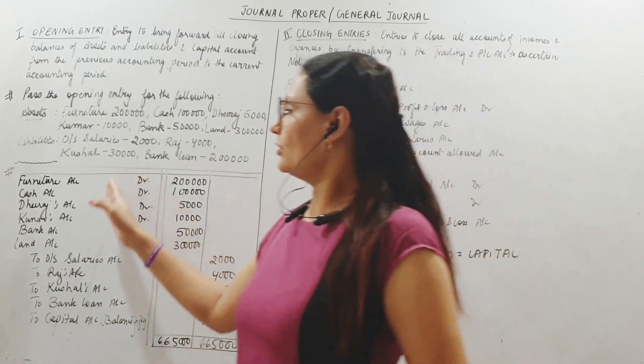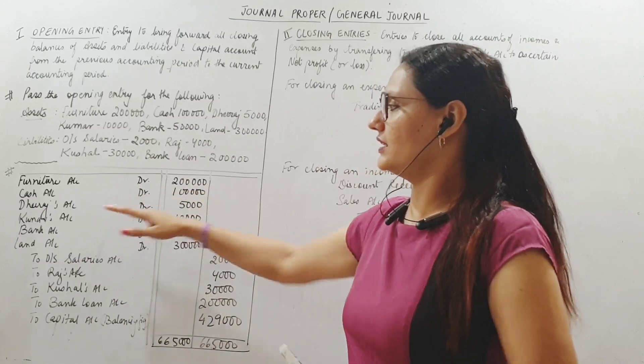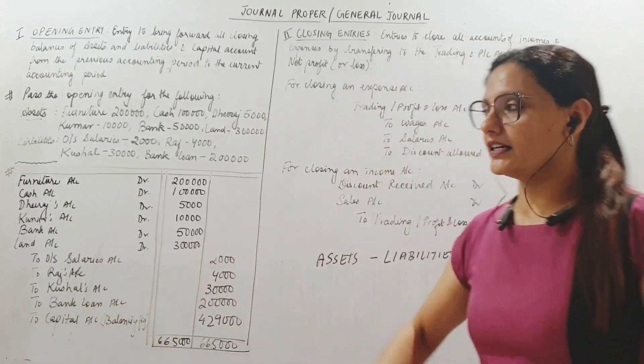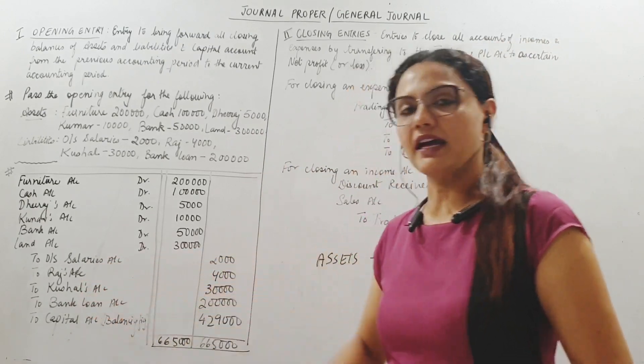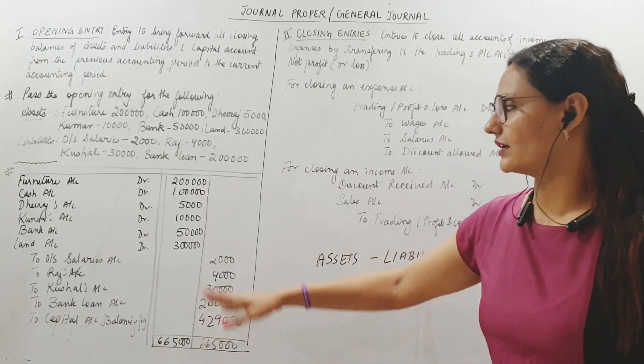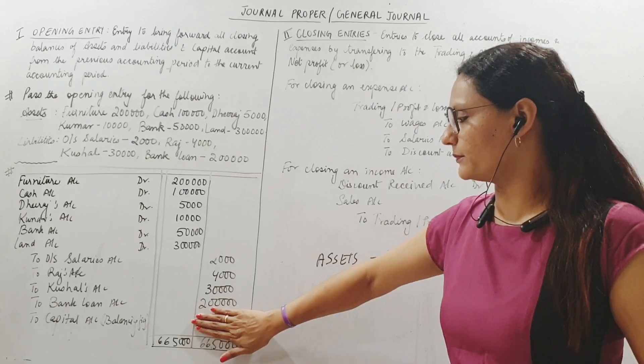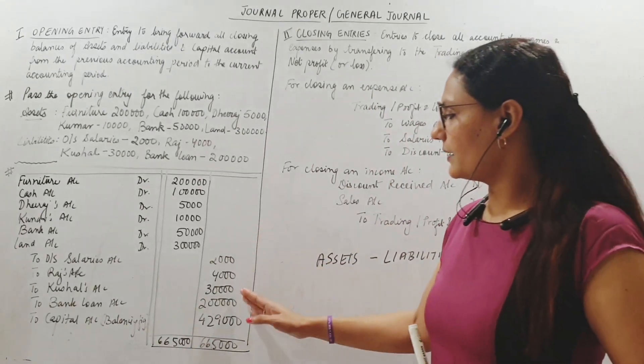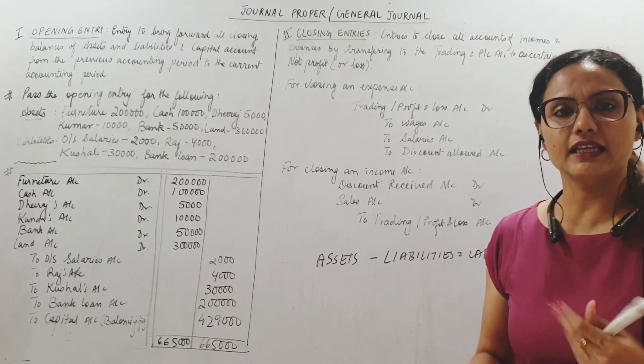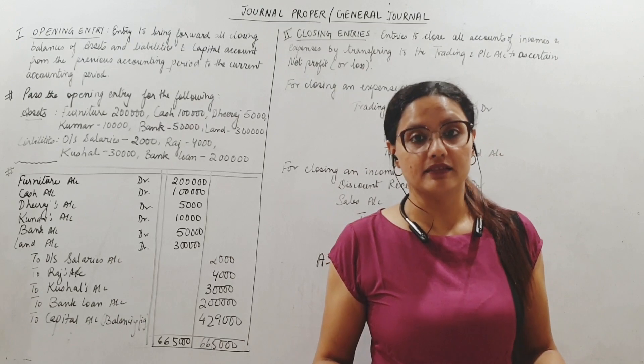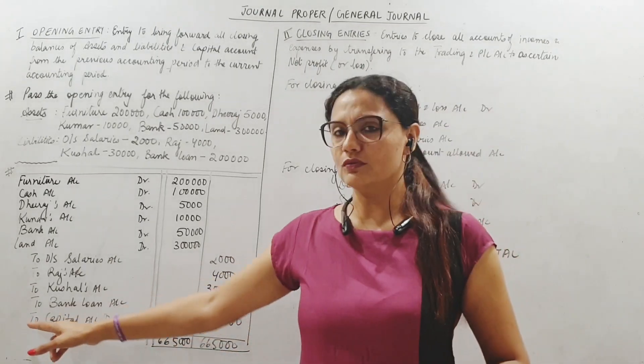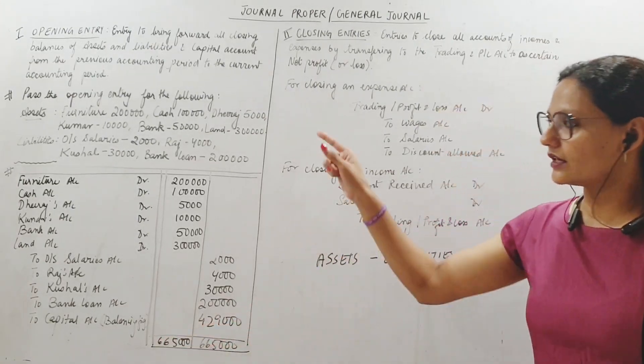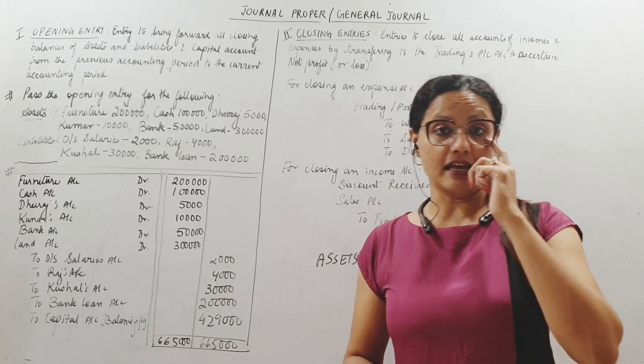Let's put it in journal format. What all do we debit? All assets: Furniture, cash, Dheeraj, Kumar, bank, and land account - all assets debited. And all liabilities I credit one by one: outstanding salary, Raj's account, Kushal's account, and bank loan. And then I find out the balancing figure. Before I put this amount, I totaled up the asset side - it was 6,65,000. And when I totaled up the liability side it was coming to something less. So why is this shortfall? All debits must be equal to credits. Therefore this balancing figure is capital. And that's how I got this. Assets minus liabilities give me capital. So 4,29,000 is not given in the sum, I have found it out by subtracting the liabilities from assets.